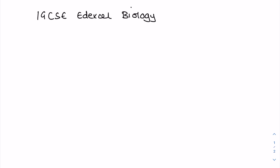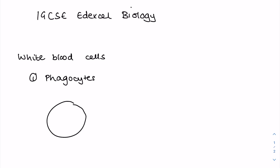We'll start with the white blood cells. There are two you need to know about. Number one is the phagocyte, which engulfs pathogens. The main thing to be aware of with phagocytes is they have what's known as a lobed nucleus, and it's this lobing that enables them to engulf pathogens because it gives them lots of space to take that pathogen into the cytoplasm where digestive enzymes help destroy it.